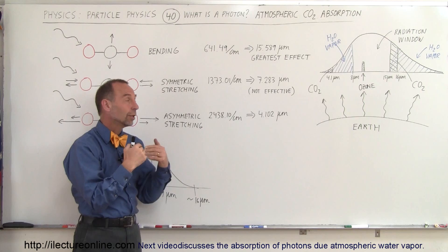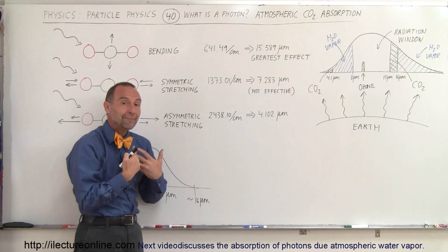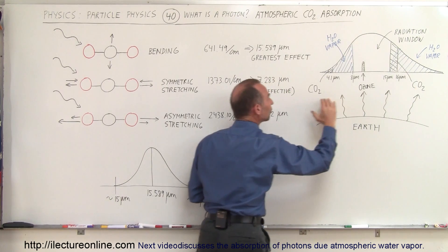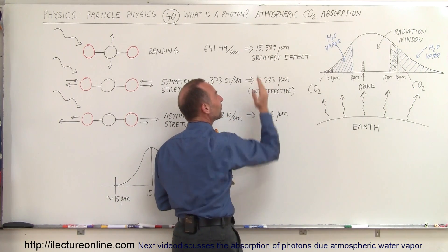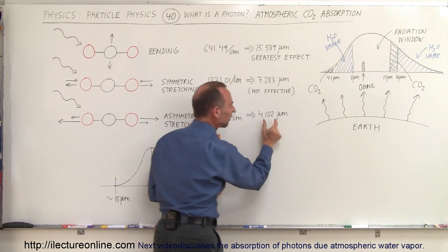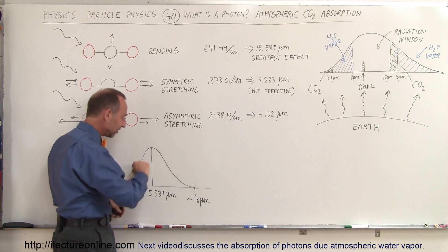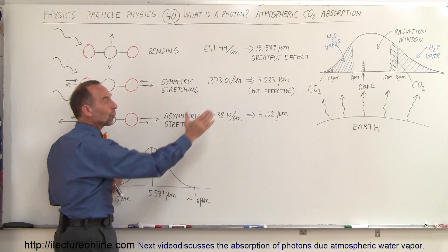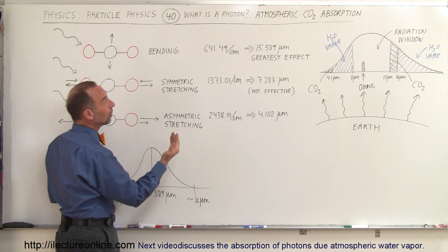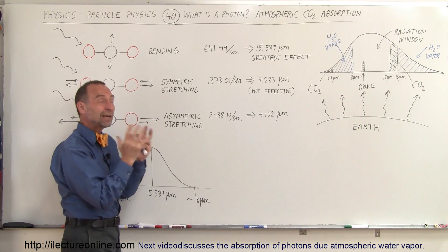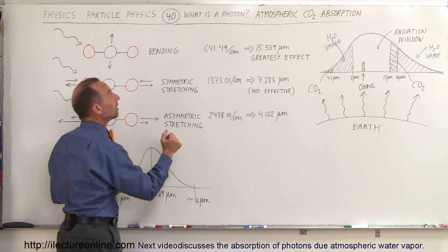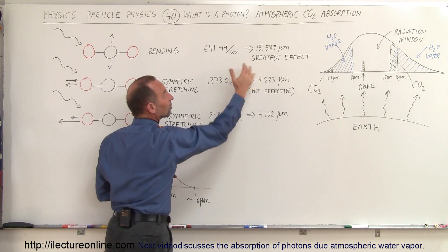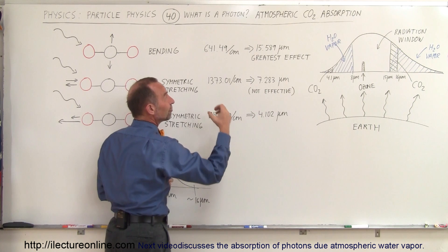So what does that mean? The Earth radiates energy away back into space, and the carbon dioxide in the atmosphere is able to absorb only those specific frequencies — not those exact numbers, but a range around them. The one most effective at keeping energy from escaping back to space is the bending vibration, which has the greatest effect in carbon dioxide absorbing energy from the Earth.